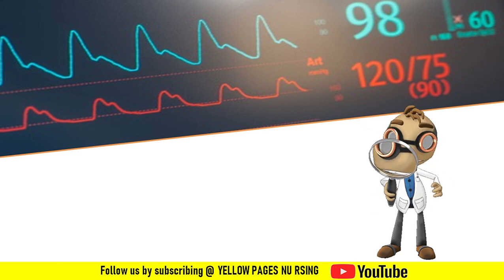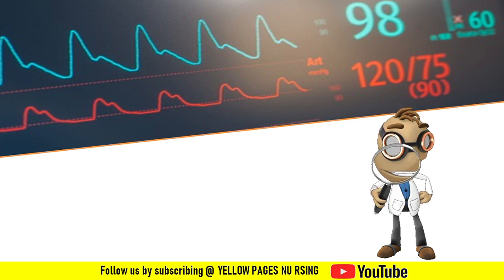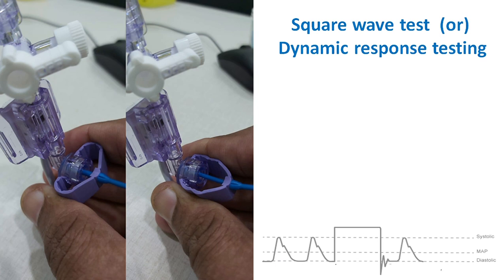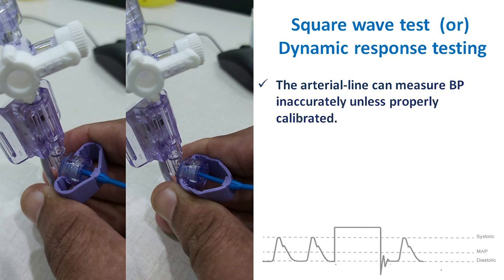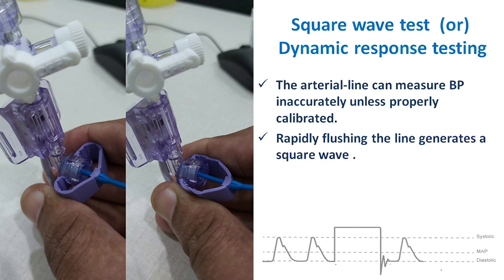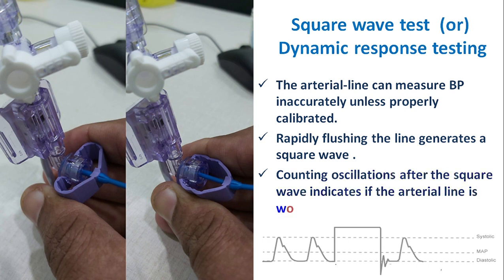The red waveform on the monitor shows the arterial line waves. Next comes the square wave test, also known as dynamic response testing. This is done because the arterial line can measure BP inaccurately unless properly calibrated. Rapidly flushing the line generates a square wave, and counting oscillations after the square wave indicates if the arterial line is working properly. This is performed once per shift to enhance accuracy.